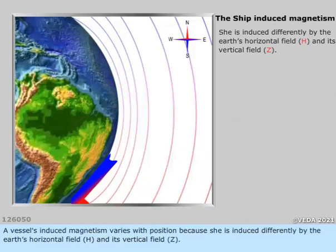A vessel's induced magnetism varies with position because she is induced differently by the Earth's horizontal field, H, and its vertical field, Z.